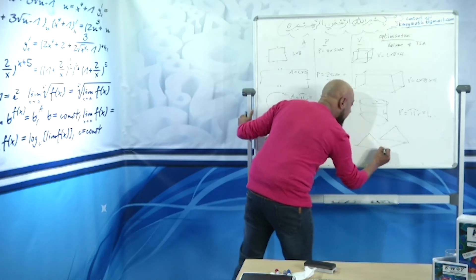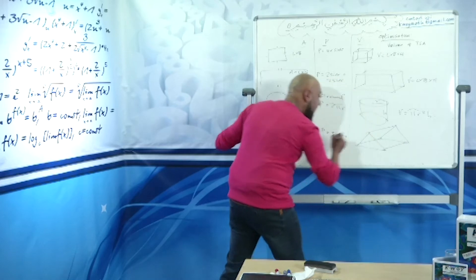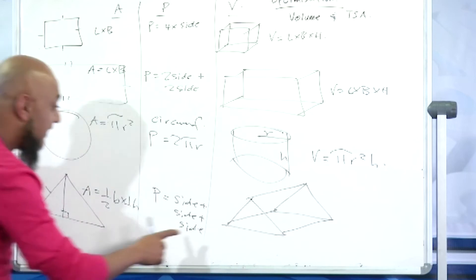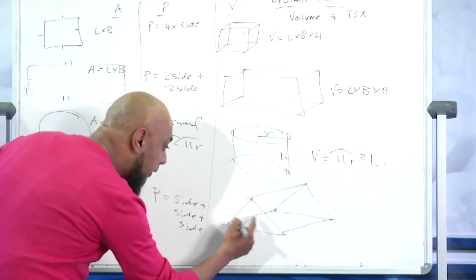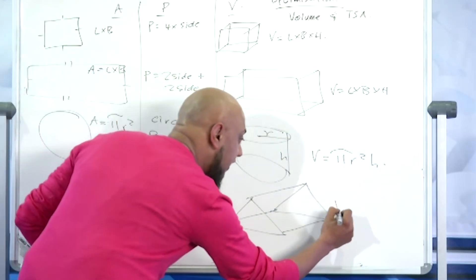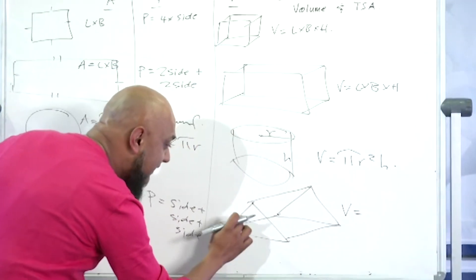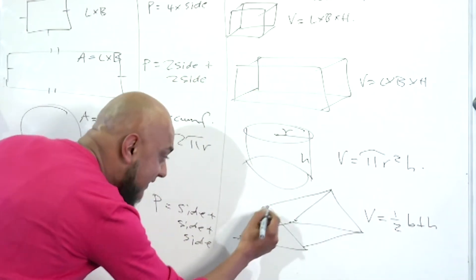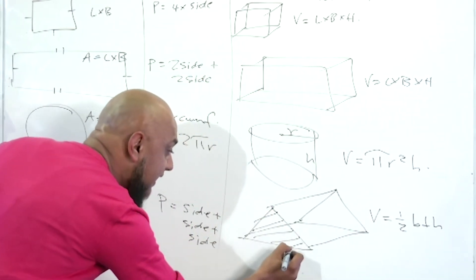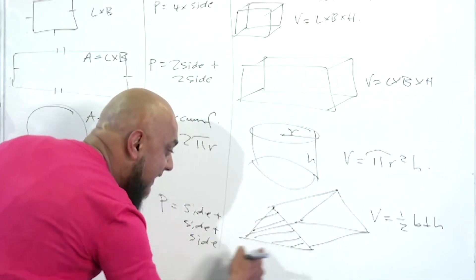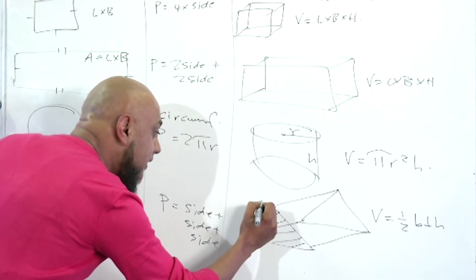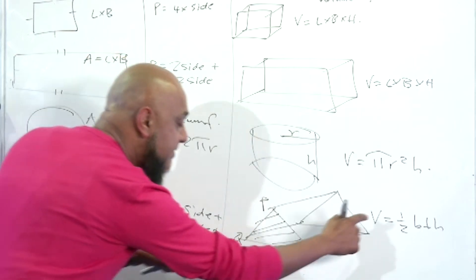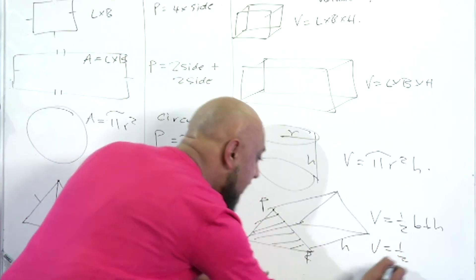If you have a triangular prism — something that looks like your Toblerone box — we're now going to get the volume. Volume is going to be half base times perpendicular height for the one triangle. So take a triangle like that: let's call this triangle PQR and let's call the perpendicular height small h.